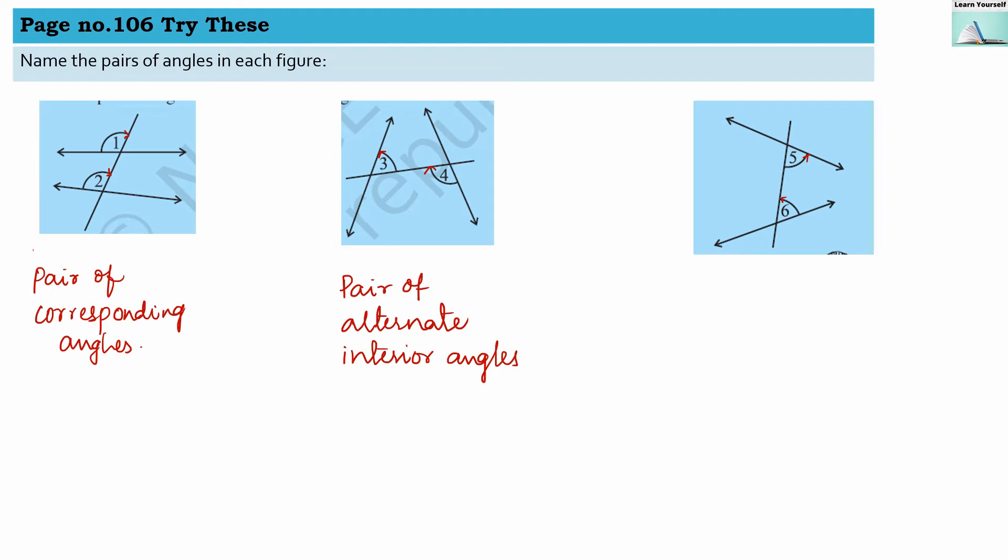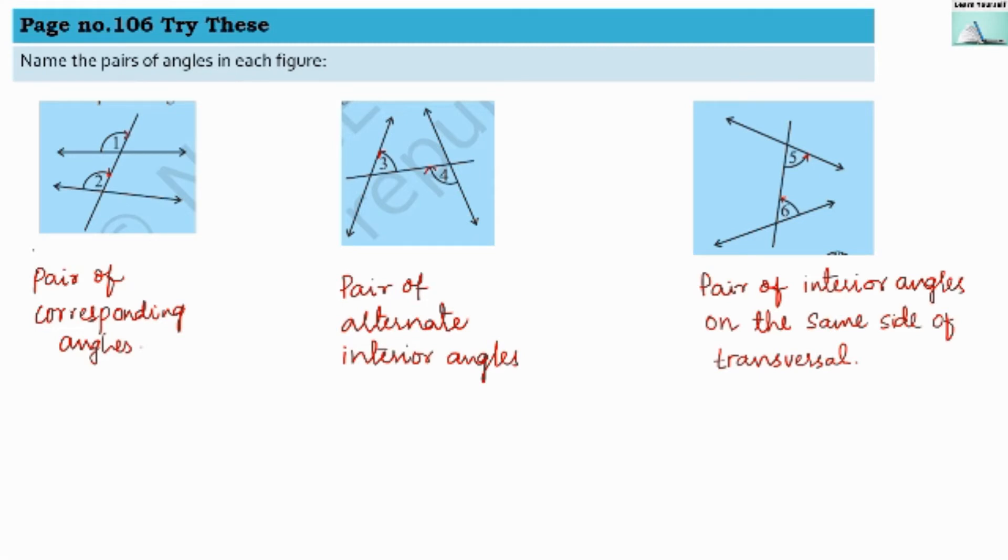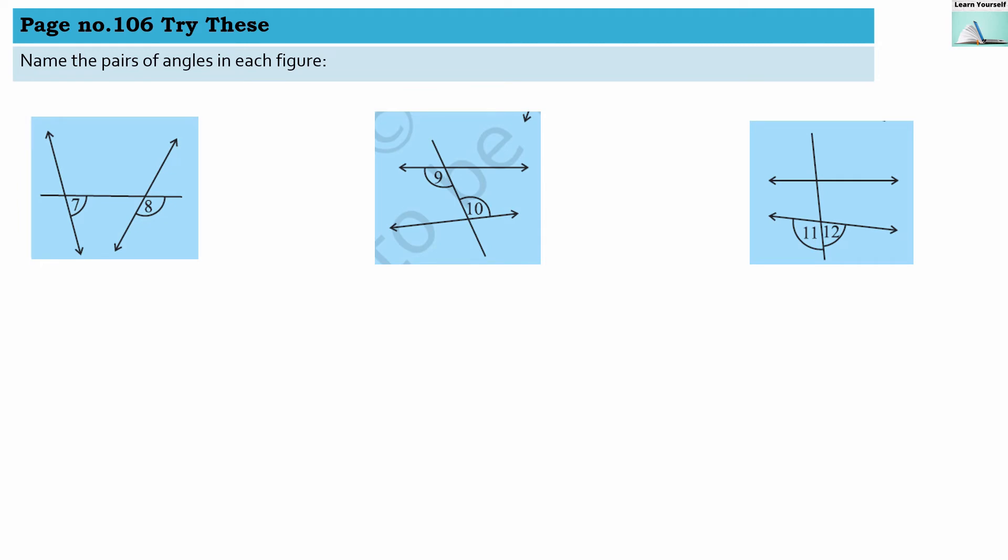Now angles 7 and 8: these angles are at the same position on different lines, so they are a pair of corresponding angles.